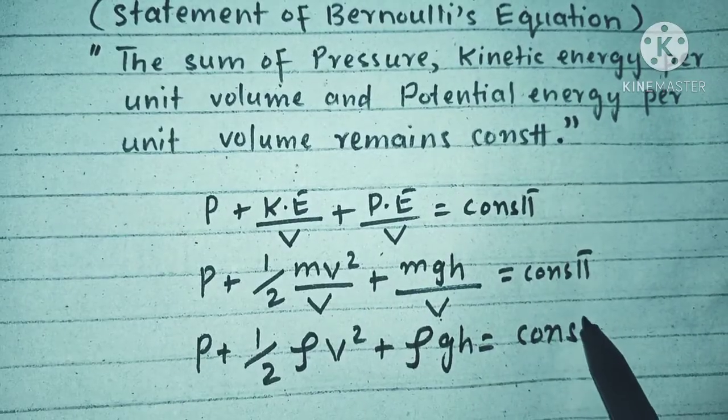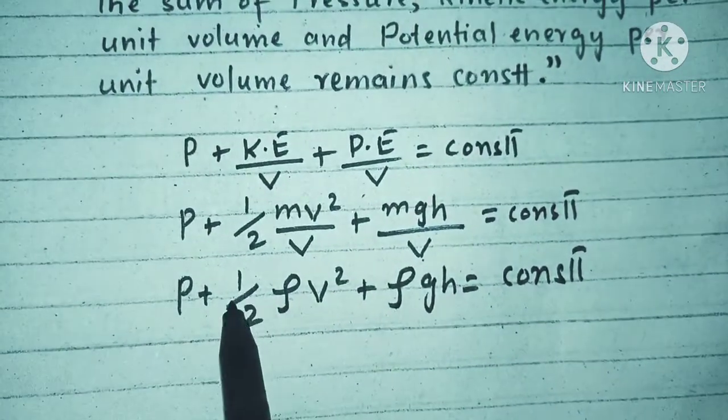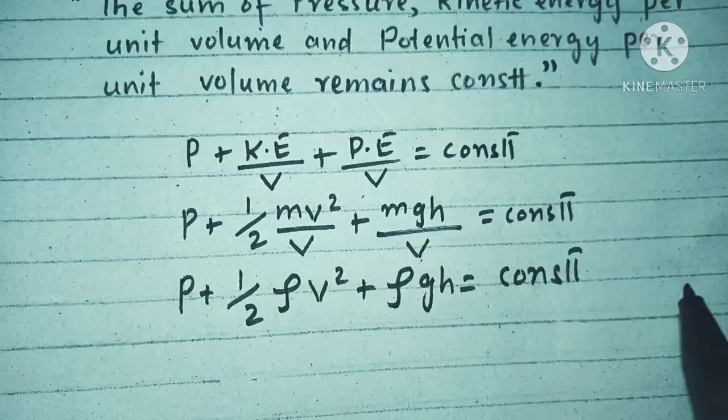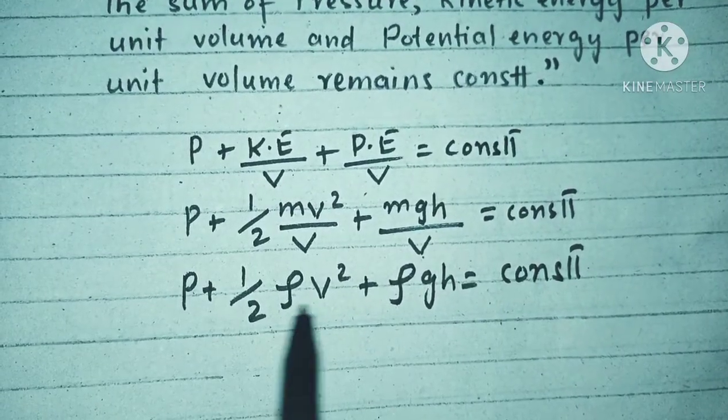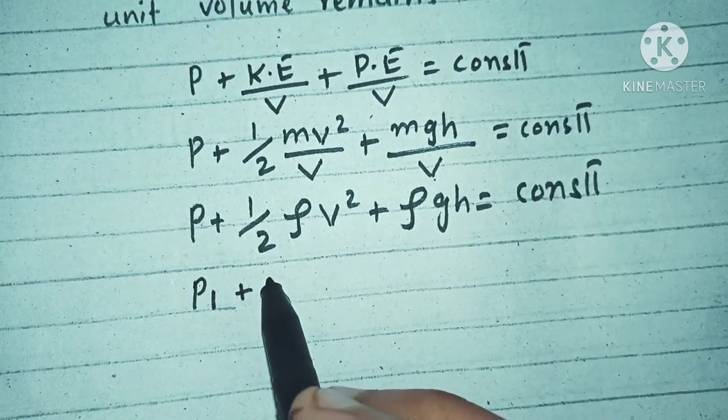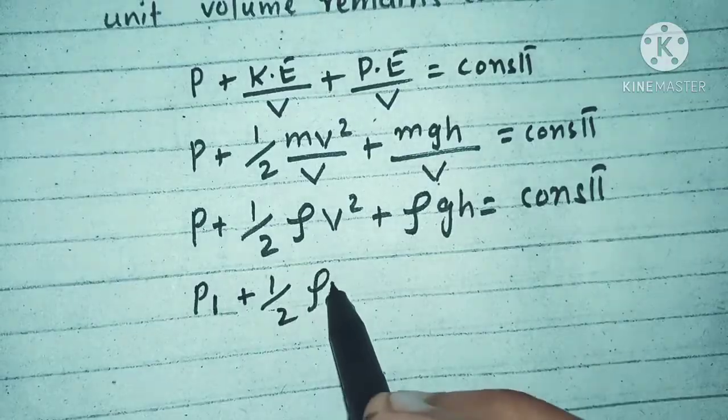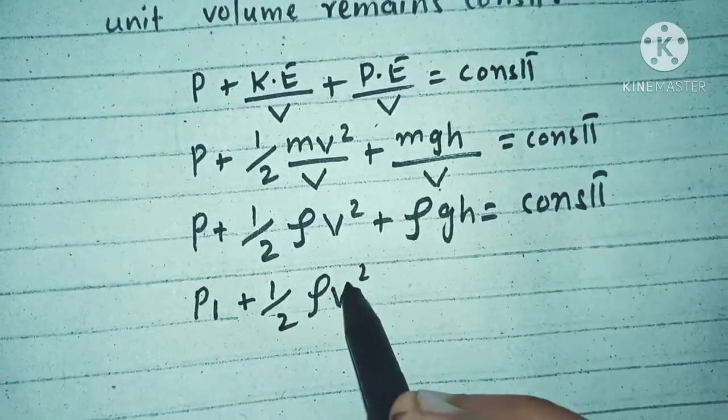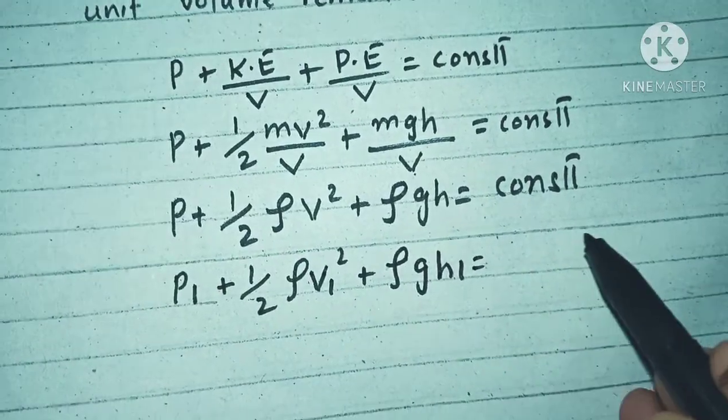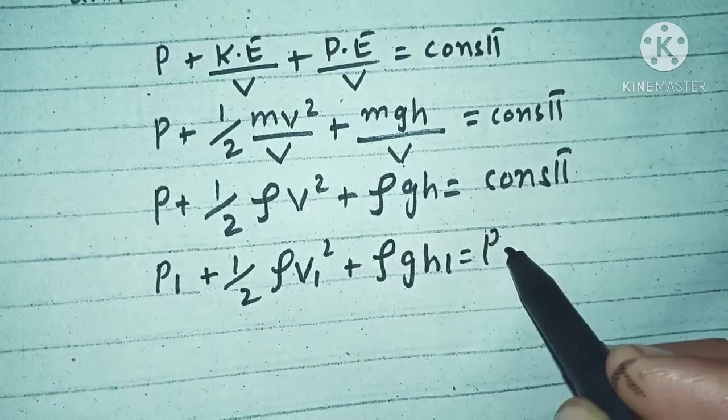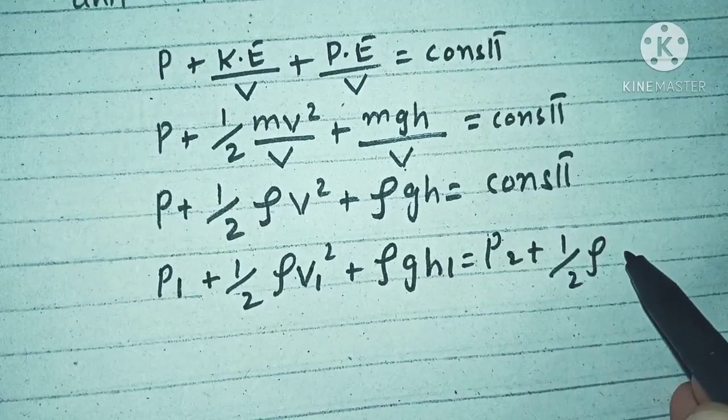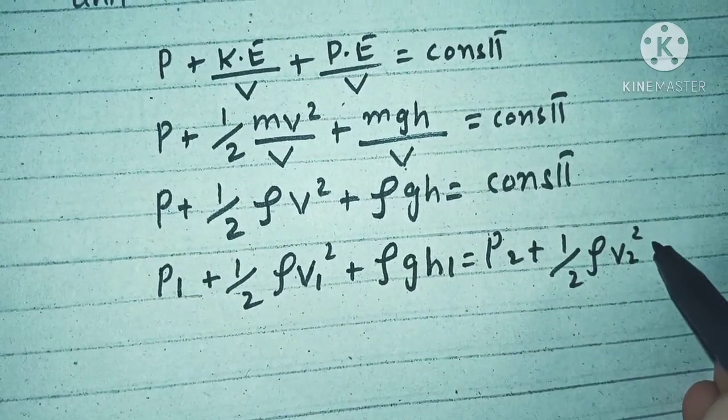What does it mean? It means that the initial sum of pressure and these things is equal to the final data. Initial data is equal to final data. So we write here P1 plus half rho V1 squared plus rho g h1 equals P2 plus half rho V2 squared plus rho g h2.